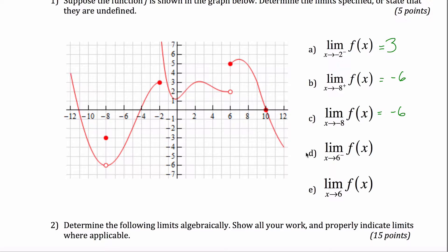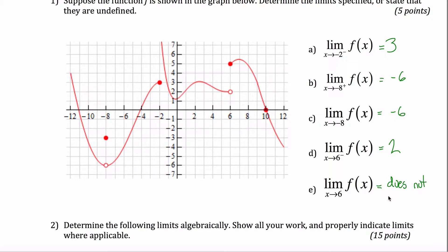What about the limit as x approaches 6 from the negative side? Here's 6, coming from the negative side — the height is getting close to 2, so that would be the answer. And for the limit as x approaches 6 with no side specified: from the negative side the height was 2, but from the positive side the height would be approaching 5. Since 2 and 5 are different, this limit does not exist — DNE.